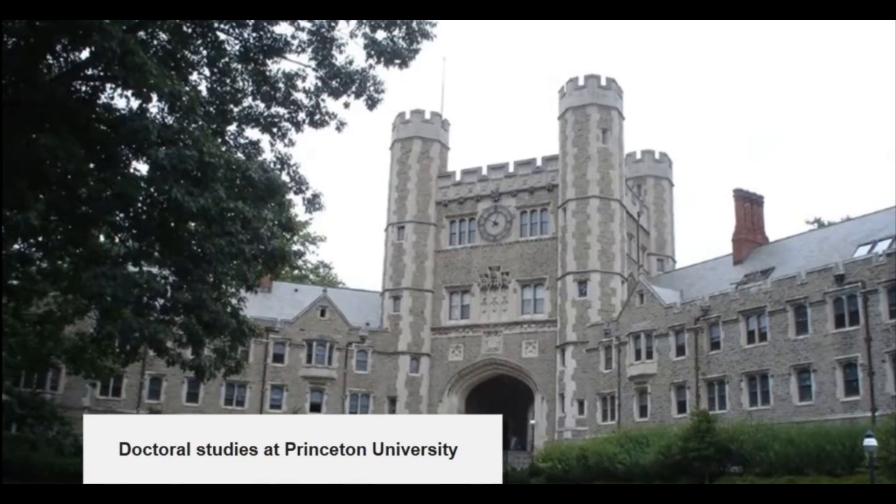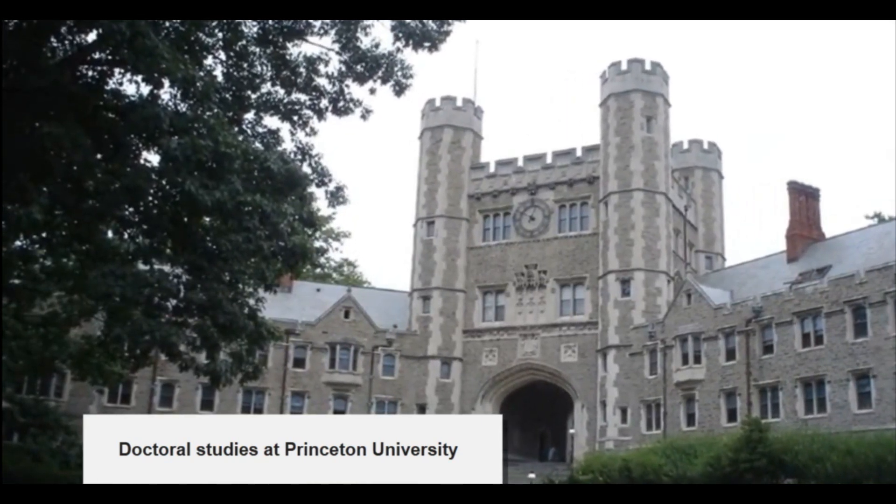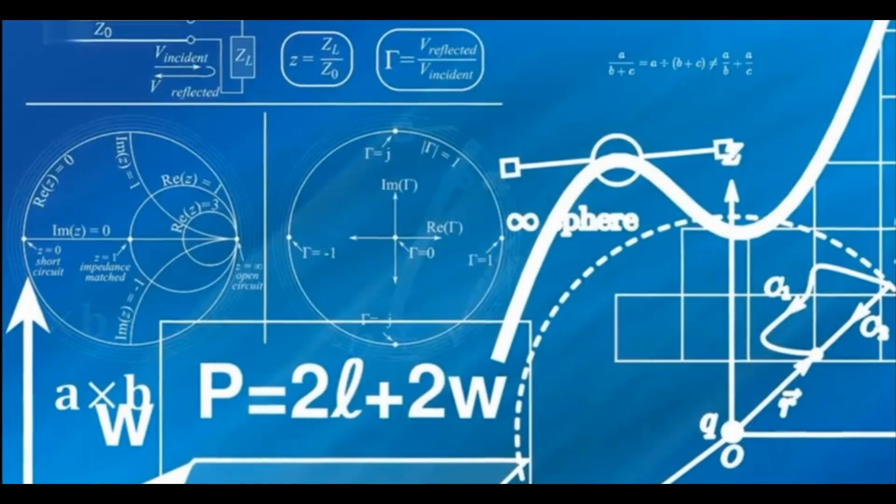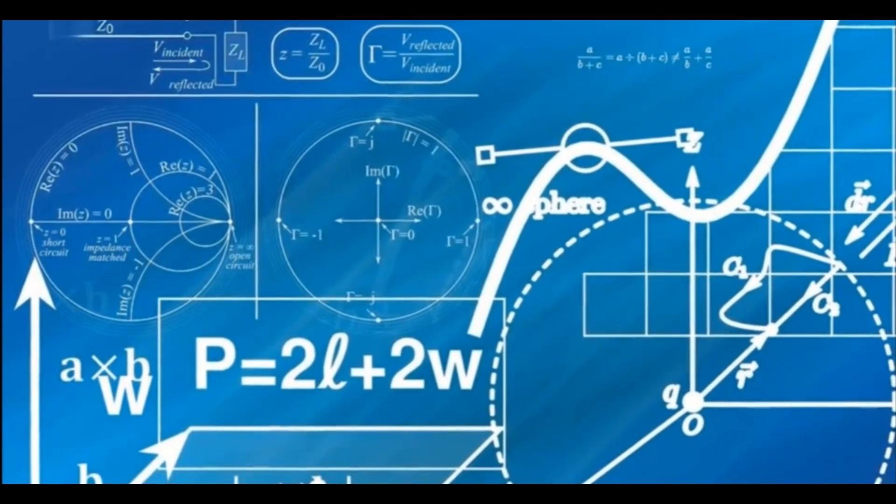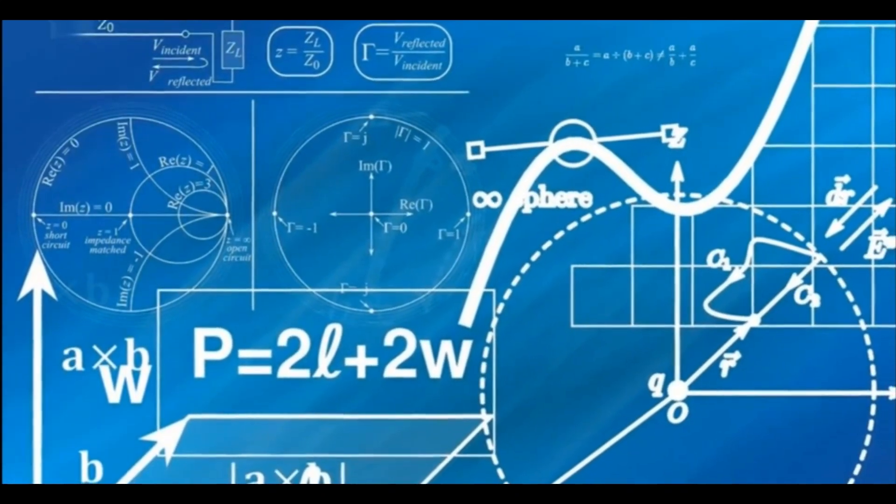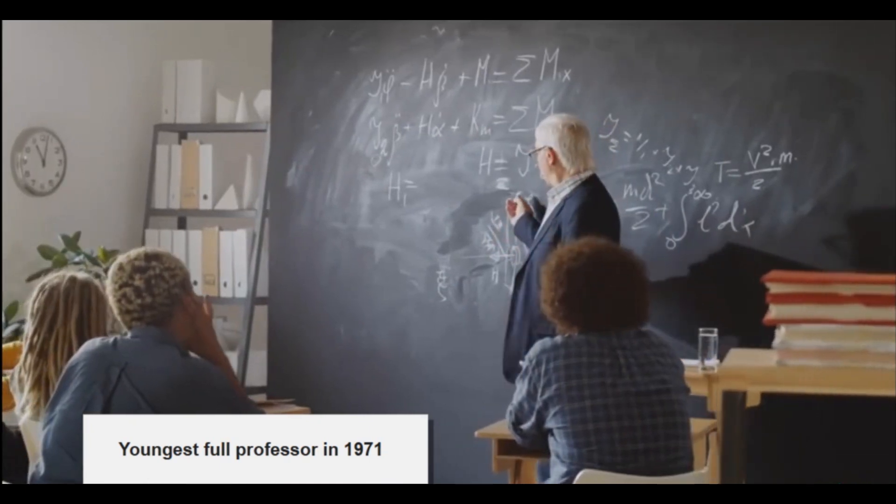Pfefferman's academic career continued to soar as he pursued his doctoral studies at Princeton University. He completed his PhD at the astonishingly young age of 20, under the guidance of Elias Stein, another prominent figure in mathematical analysis. This achievement alone would have been remarkable, but Pfefferman was just getting started.